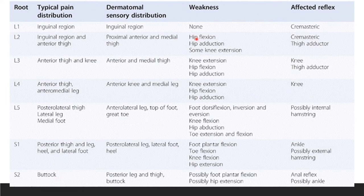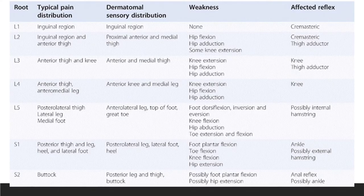Regarding motor weakness: L1 has no specific weakness; L2 causes hip flexion and adduction weakness; L3 causes knee extension weakness; L4 also causes knee extension weakness; L5 causes foot dorsiflexion weakness; S1 causes plantar flexion of foot weakness; and S2 causes plantar flexion of foot and hip extension weakness.